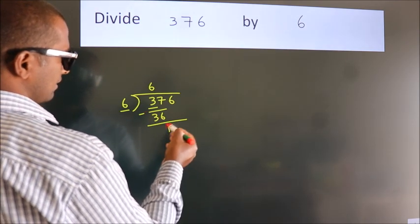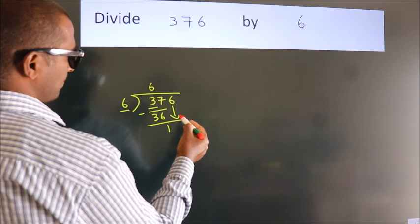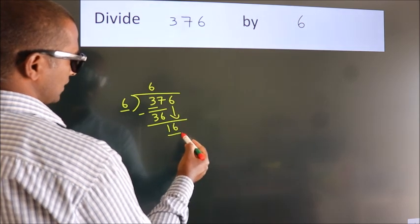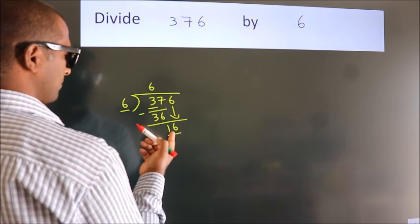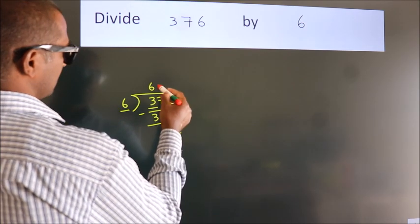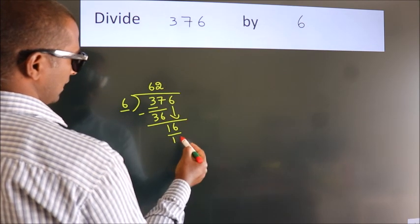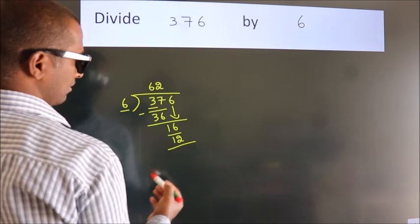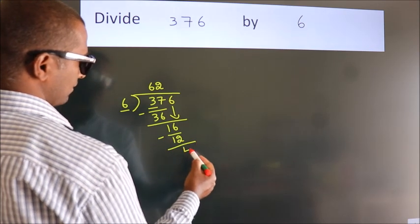After this, bring down the beside number. So, 6 down. So, 16. A number close to 16 in the 6 table is 6 times 2, 12. Now we subtract. We get 4.